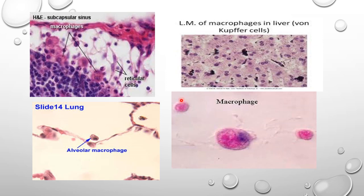There are various types of macrophages shown here. In this slide of the liver, the black-stained ones are the liver macrophages or Kupffer cells, responsible for engulfing and phagocytosing any microorganisms or foreign particles from the blood sinusoids. In the lungs, you can see the alveolar macrophages, which engulf and entrap any dust particles or other foreign particles. In the tissues, they are called histiocytes.